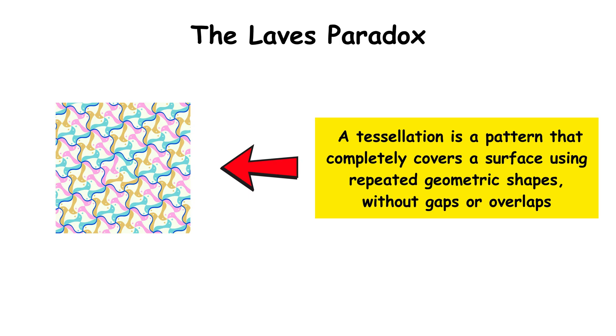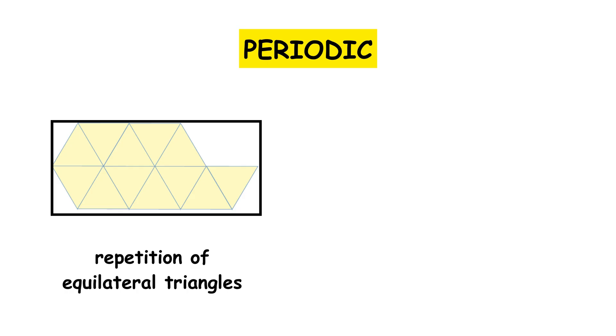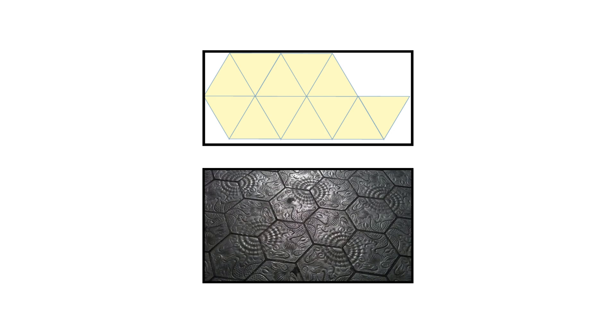The most well-known tessellations are periodic. They repeat the same module regularly across the plane. Classic examples include the repetition of equilateral triangles, or the hexagonal structure of a beehive or a floor design. In any case, an evident symmetry is observed.